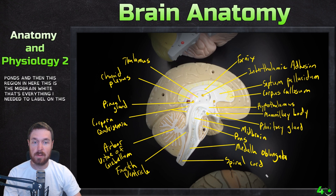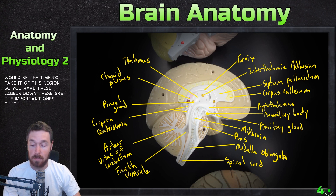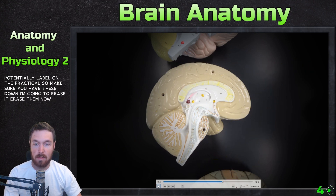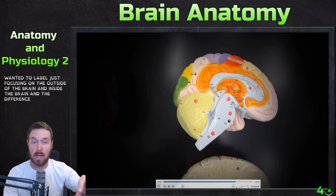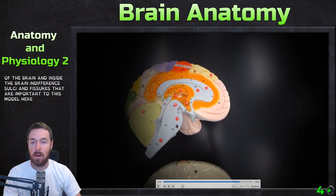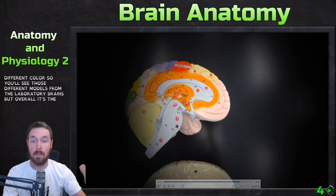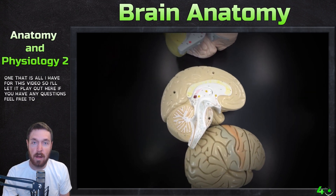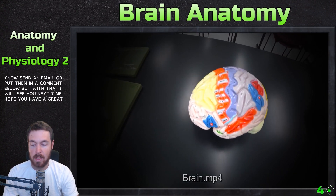That's everything I needed to label on this model. If you want to take a screenshot now is the time — these are the important structures that could appear on the practical. We covered the outside of the brain, the inside of the brain, and the important sulci and fissures. The model also shows somatosensory and motor function locations, which we discussed in the lecture. If you have any questions, send me an email or put them in the comments below. See you all next time — have a great day!